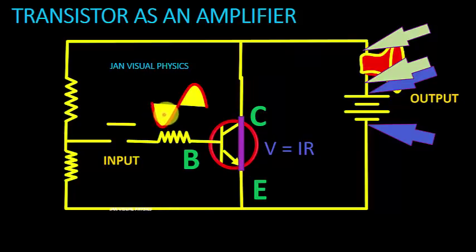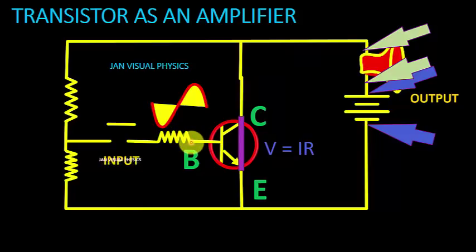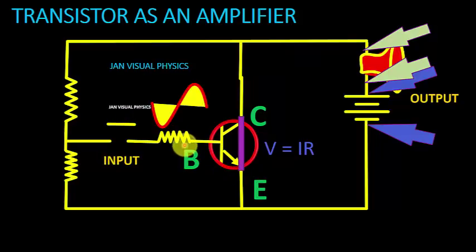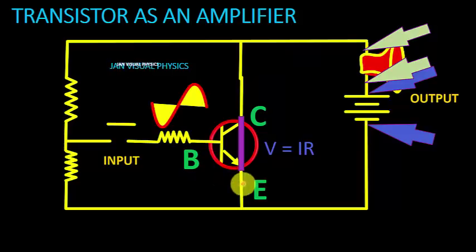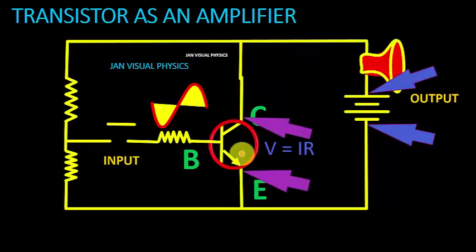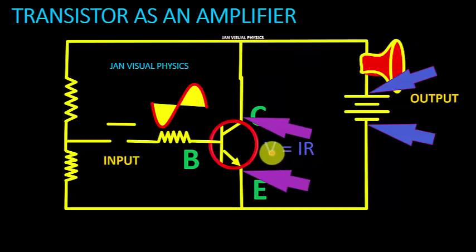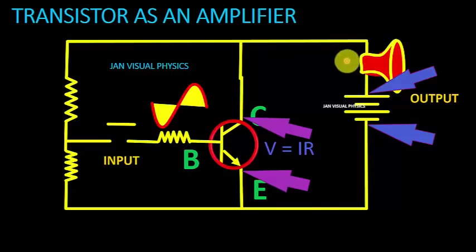During the next negative half cycle, the base of our transistor is negative. Due to the negative base, the emitter-base junction becomes reverse biased and the reverse bias increases, due to which the resistance of the transistor increases. As a result, voltage drop across the transistor increases and very small voltage drops across our load.